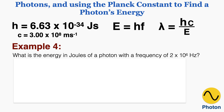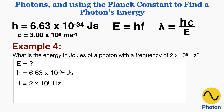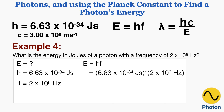Example 4: What is the energy in joules of a photon with a frequency of 2 times 10 to the 6th Hertz? We're looking for energy and we have the Planck constant and the frequency. Plugging into E equals h times f gives a final answer of 1.33 times 10 to the negative 27th joules. So that's everything you need to know about the connection between the frequency, wavelength, and energy that photons contain.